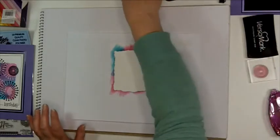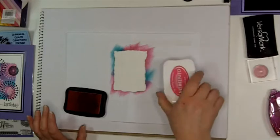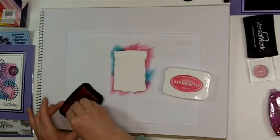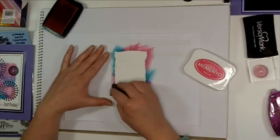There, it shouldn't really take very long to dry. And for this bit I'm using a memento ink. This is rosebud this color. And also I'm going to use a distress ink in peacock feathers as well.